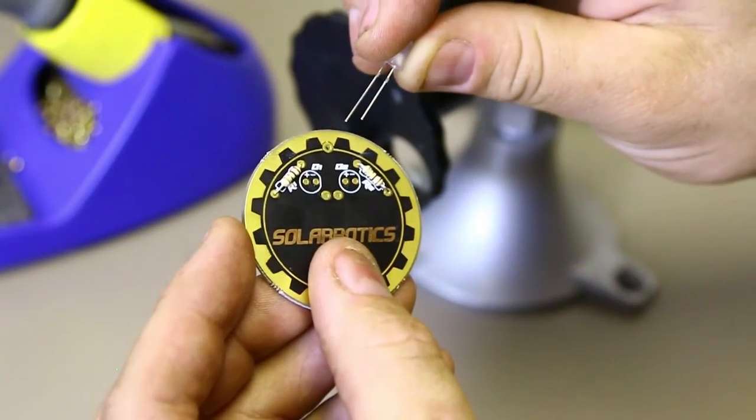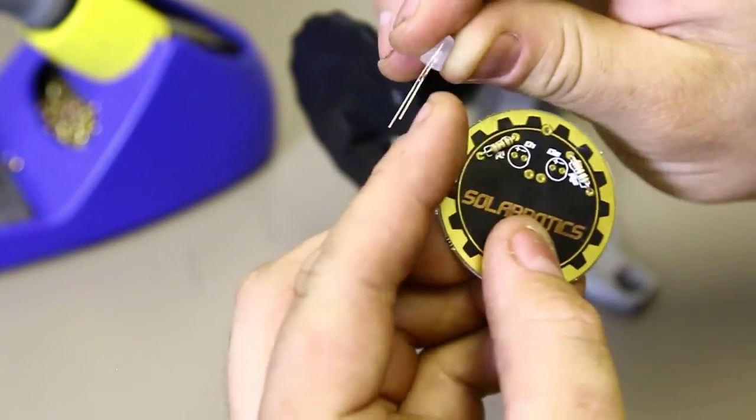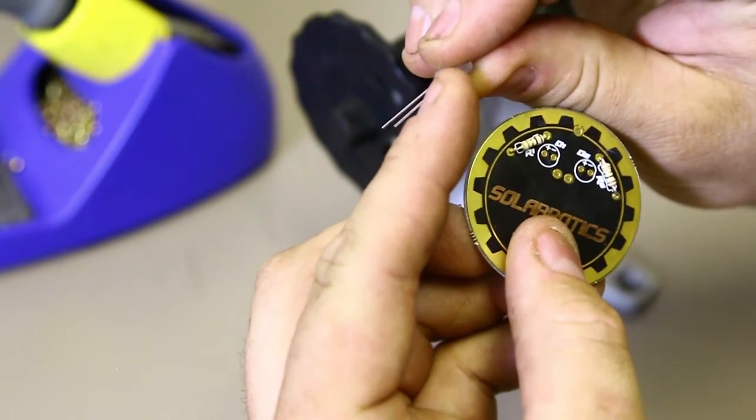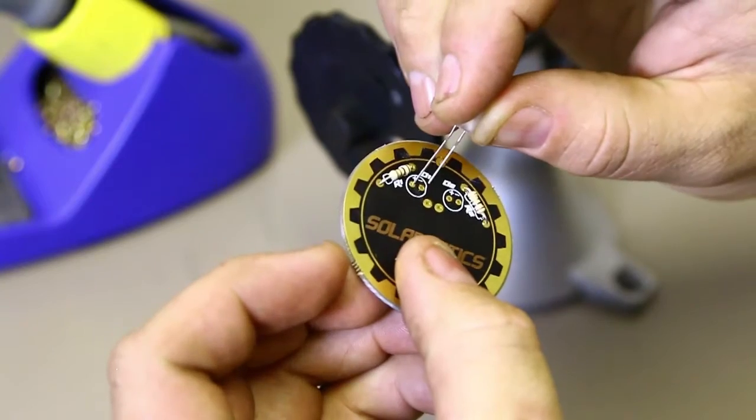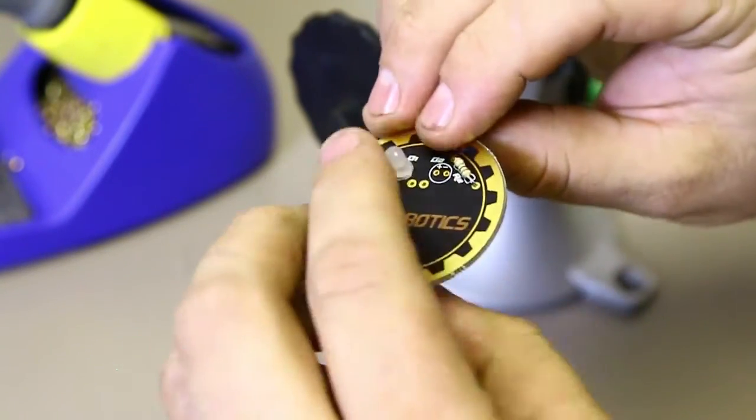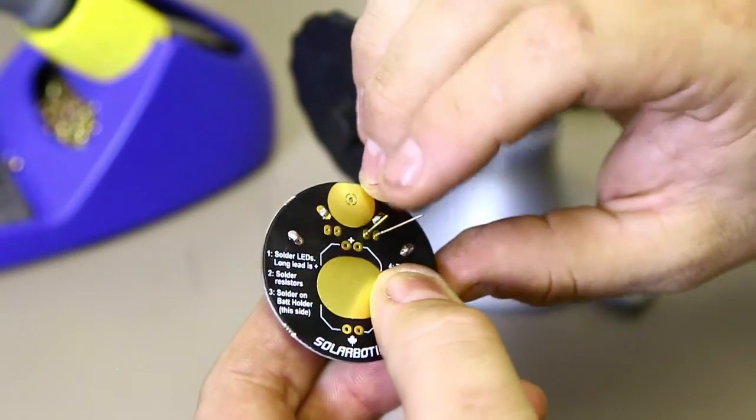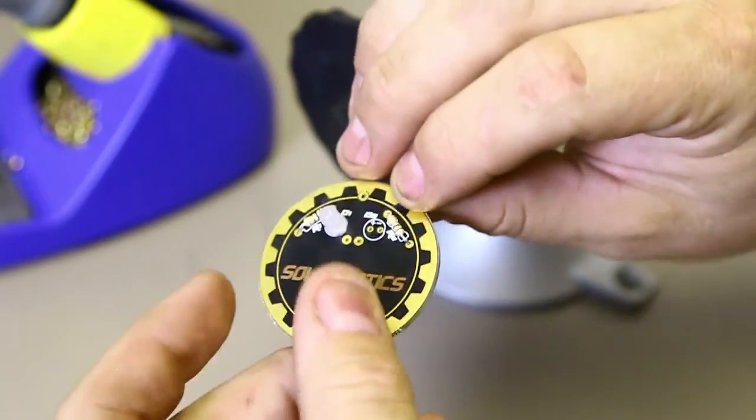When you insert the LEDs, the long leg here denotes positive. There's also a flat spot on the ring around the outside of the LED that indicates negative. Insert the positive leg into the positive hole and push it in tight, and then we'll flip it upside down and spread the legs just a little tiny bit so that when we put it into the helping hands, the part doesn't fall out.